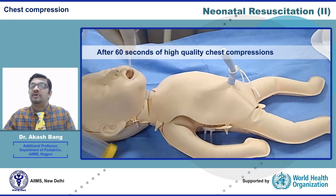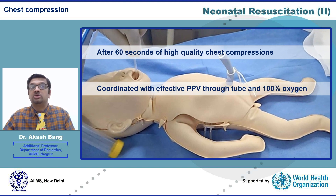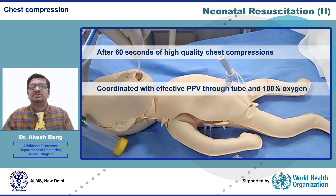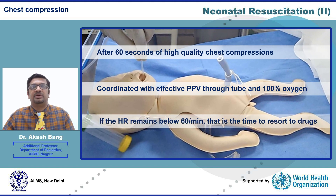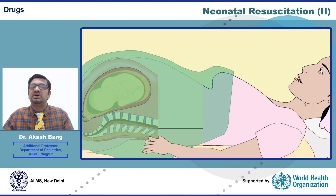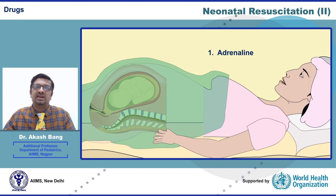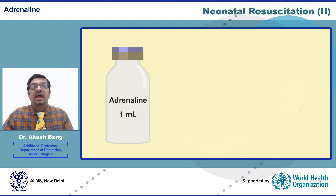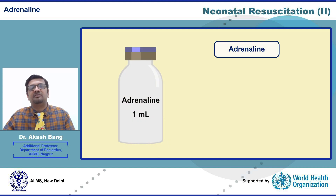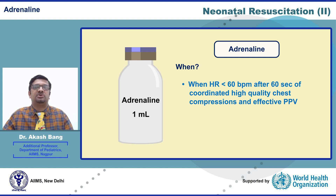Even after 60 seconds of high-quality chest compressions coordinated with effective positive pressure ventilation through an endotracheal tube with 100% oxygen, if the heart rate remains below 60 per minute, that is the time to resort to drugs. Only two drugs are available for use in the delivery room: adrenaline and volume expanders. Adrenaline is indicated when the heart rate remains below 60 beats per minute even after 60 seconds of high-quality chest compressions coordinated with effective PPV through endotracheal tube with 100% oxygen.